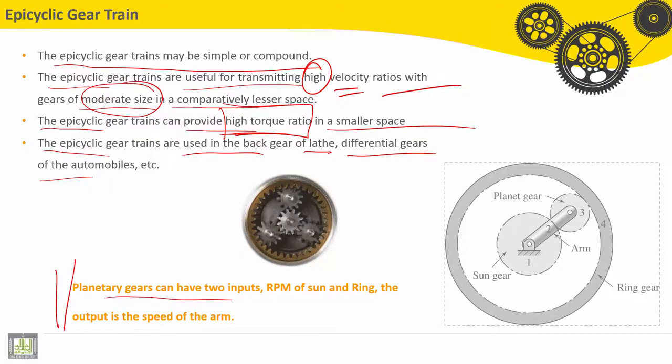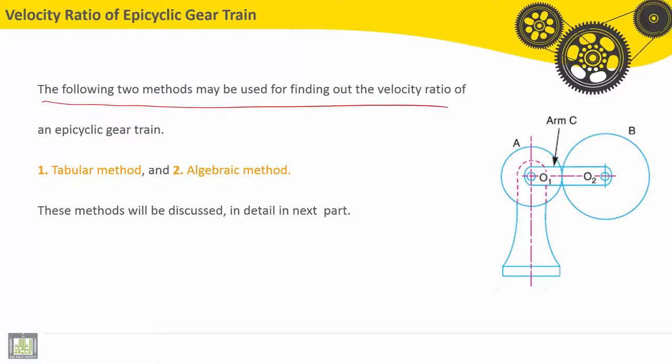Planetary gears can have two inputs: RPM of sun and ring. The output is the speed of the arm.